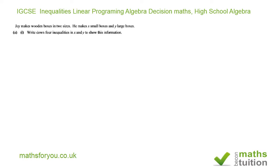The first condition is he makes at least five small boxes. So x has got to be greater than or equal to five. You can have five, six, seven, eight, nine, ten and so on small boxes. So the first inequality is x ≥ 5.